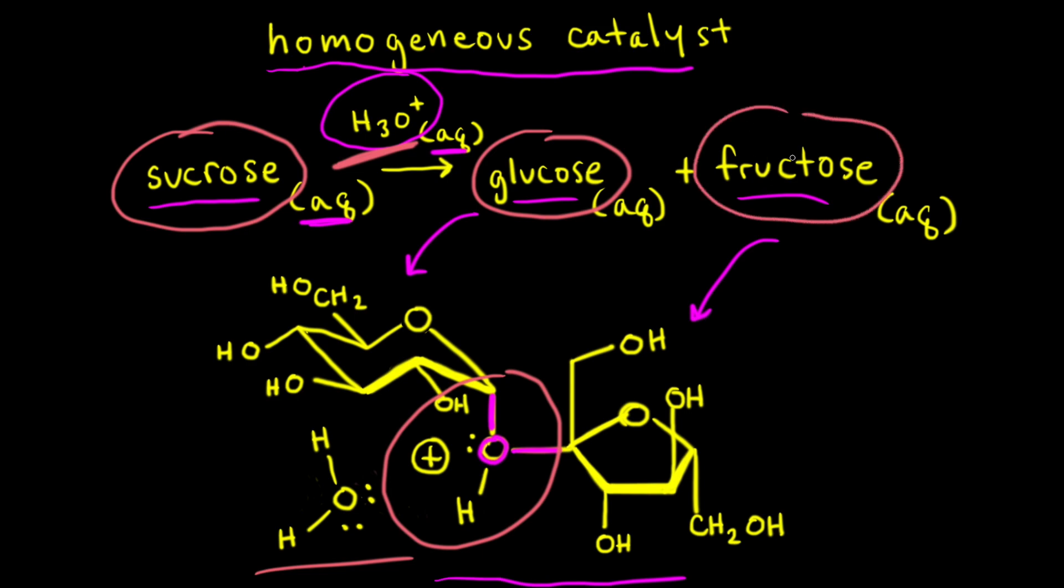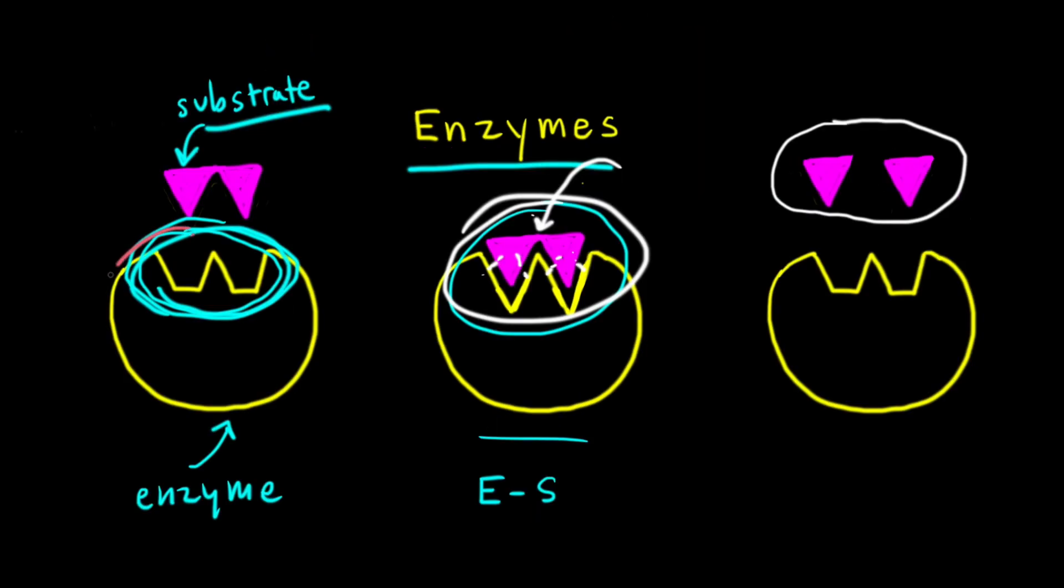Honey bees actually have the enzyme to convert sucrose, which is table sugar, into glucose and fructose. And since fructose is sweeter than sucrose, honey is sweeter than table sugar.